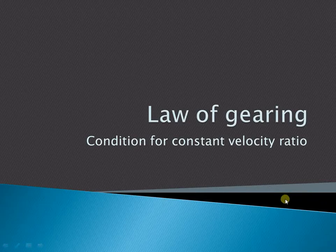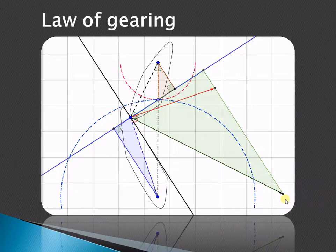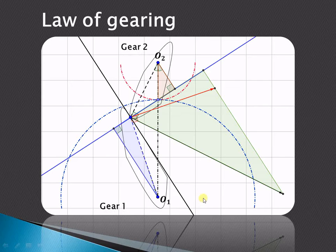Let us try to understand what is the law of gearing or condition for constant velocity ratio. Here we have shown two teeth in mesh with each other — two gears in mesh. This is gear 1 and gear 2, with their respective centers O1 and O2. The pitch point is the point at which the two pitch circles of gear 1 and gear 2 intersect each other, that is point P.